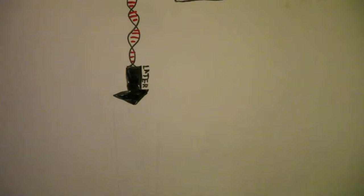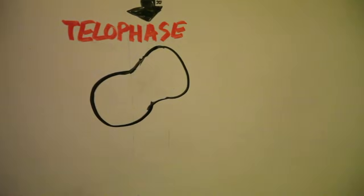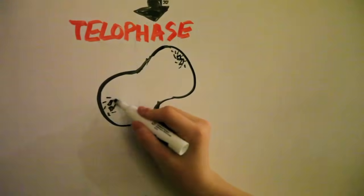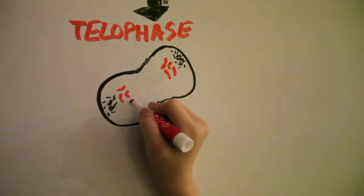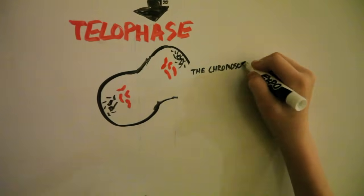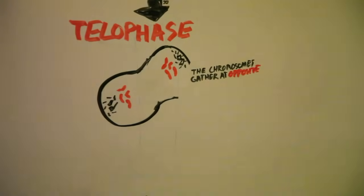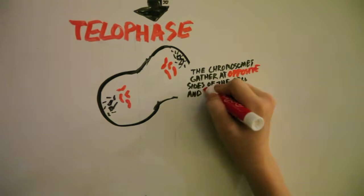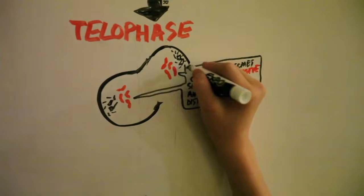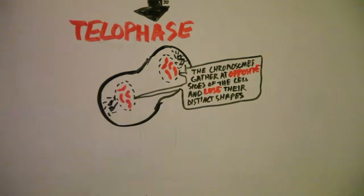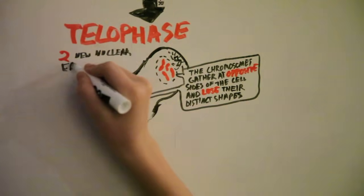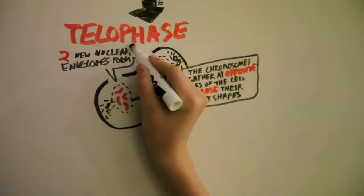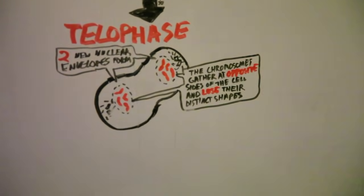Later, in telophase, the chromosomes gather at opposite sides of the cell and lose their distinct shapes. Two new nuclear envelopes will form around the newly separated chromosomes. The one cell is taking on a new shape.